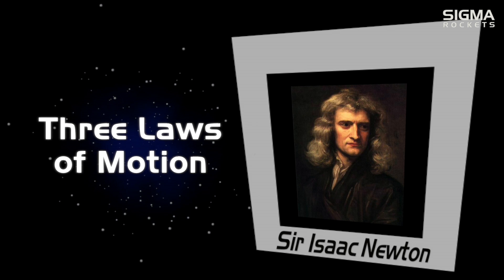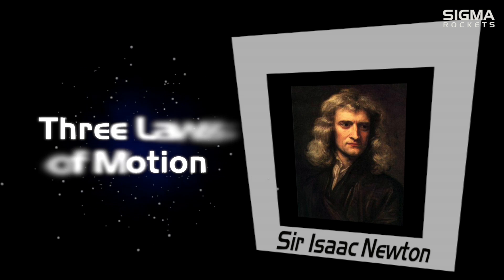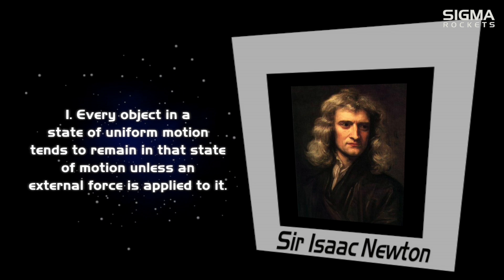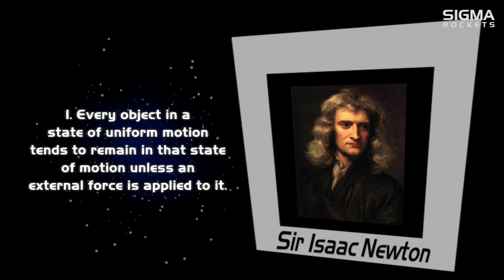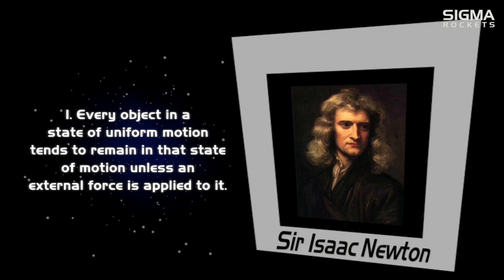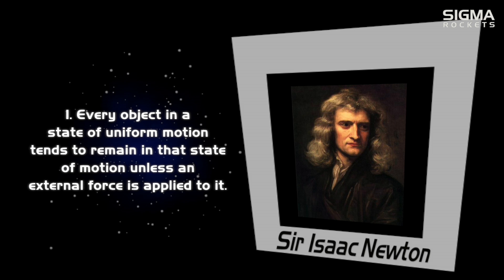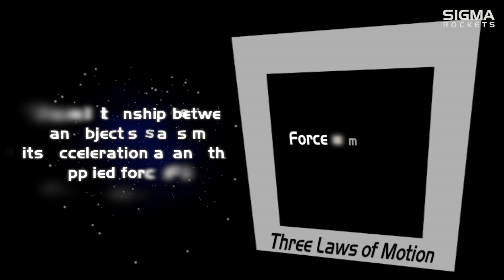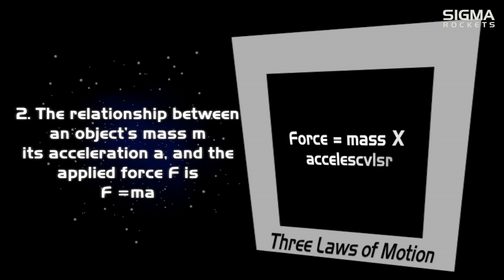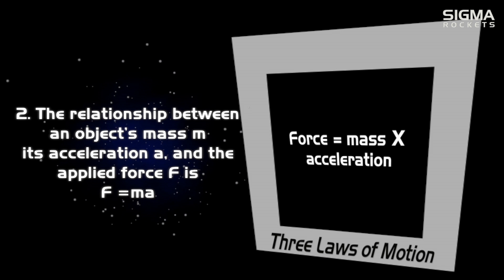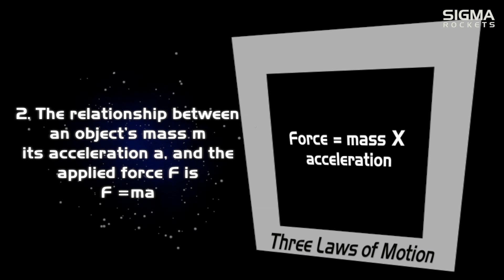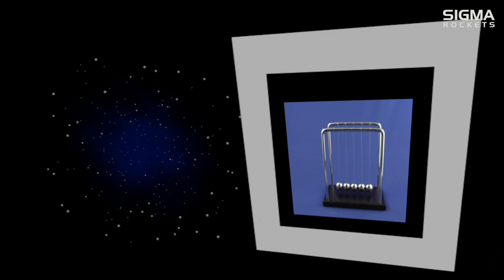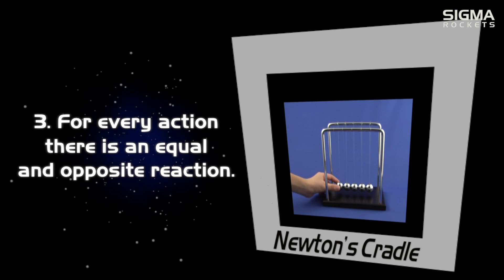Newton condensed rocket science into three laws of motion. Every object in a state of uniform motion tends to remain in that state of motion unless an external force is applied to it. The relationship between an object's mass, m, its acceleration, a, and the applied force, f, is f equals ma. For every action, there is an equal and opposite reaction.